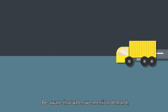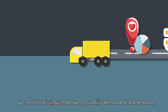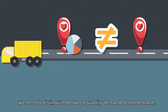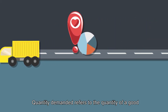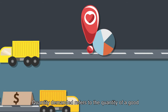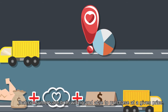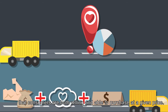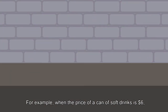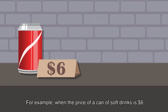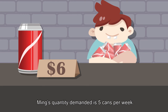Be aware that when we mention demand, we need to distinguish between quantity demanded and demand. Quantity demanded refers to the quantity of a good that consumers are both willing and able to purchase at a given price. For example, when the price of a can of soft drink is $6, Ming's quantity demanded is five cans per week.